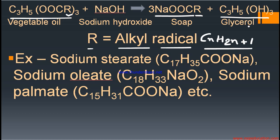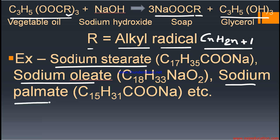Glycerol is the byproduct of the soap industry. A common question in SEE is to write examples of any two soaps. Examples of soap are sodium stearate, sodium oleate, and sodium palmitate — these are the chemical names of soaps. This covers the preparation of soap: vegetable oil heated with sodium hydroxide or potassium hydroxide forms soap and glycerol.